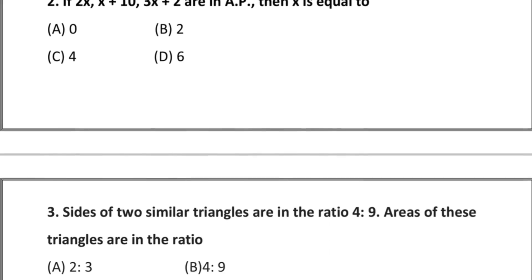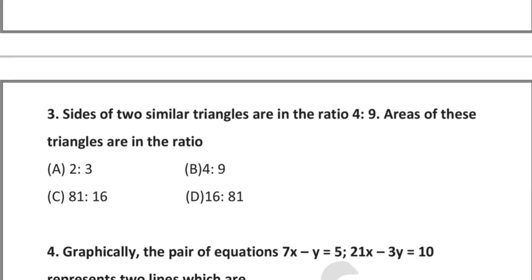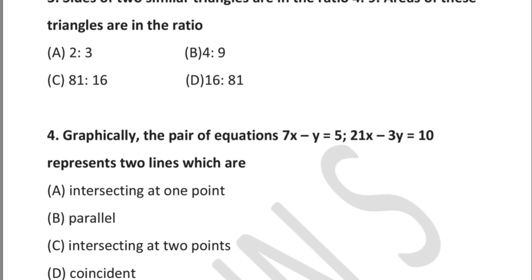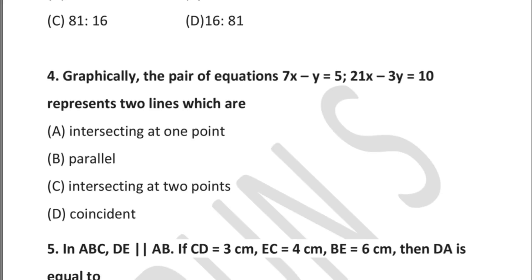Question 3: sides of two similar triangles are in the ratio 4:9. The areas of these triangles are in the ratio — option A: 2:3, option B: 4:9, option C: 81:16, option D: 16:81.